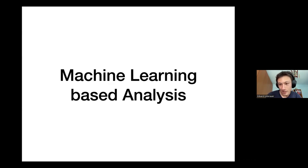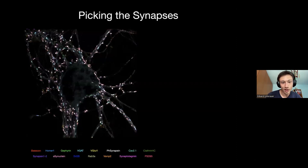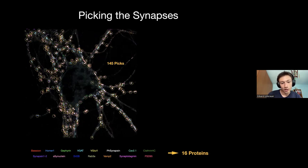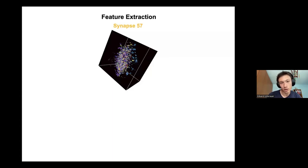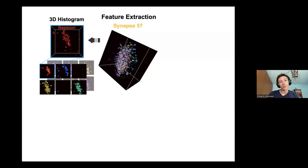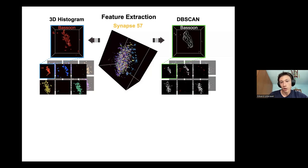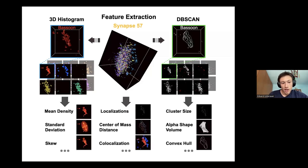How do you investigate such a highly multiplexed data set? What we did was propose an analysis workflow for 16 proteins inside synapses. For this specific field of view we picked 145 synapses, and across all data sets 890 synapses. We extracted features: 3D histograms from localization positions, DB-SCAN clustering to remove noise, and then extracted features including mean density, total localizations, center of mass distances, volumes of each structure, and co-localization metrics.